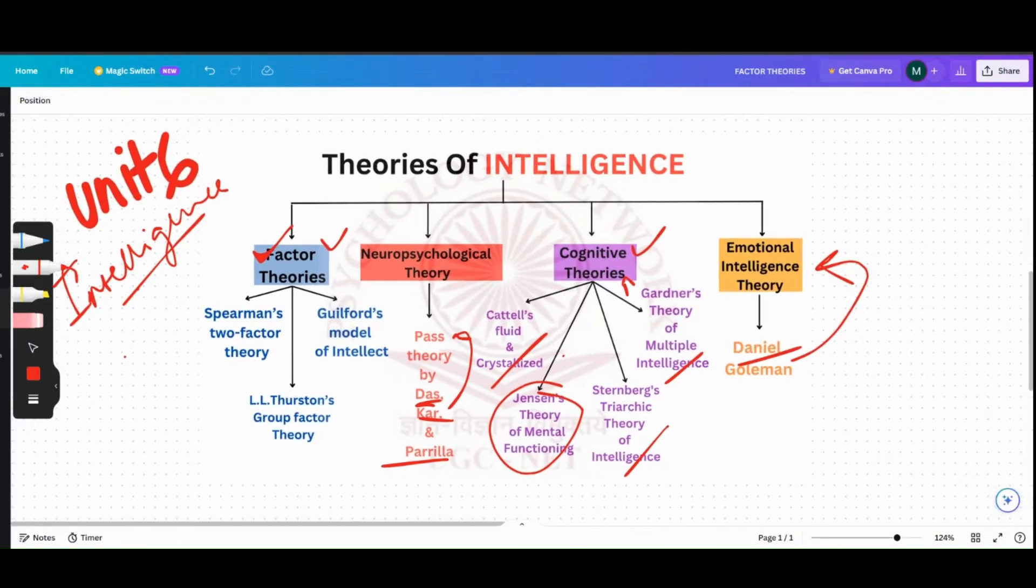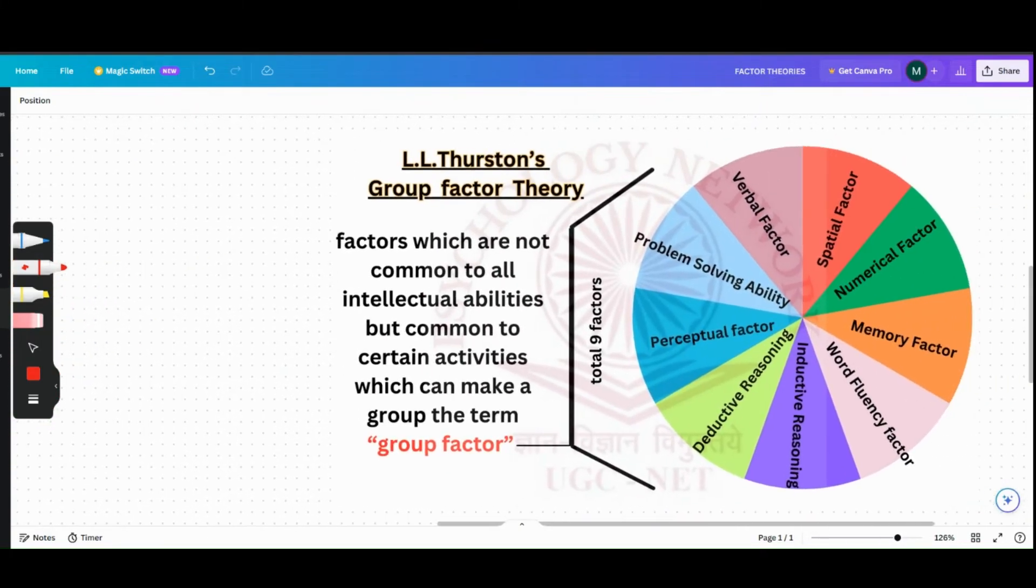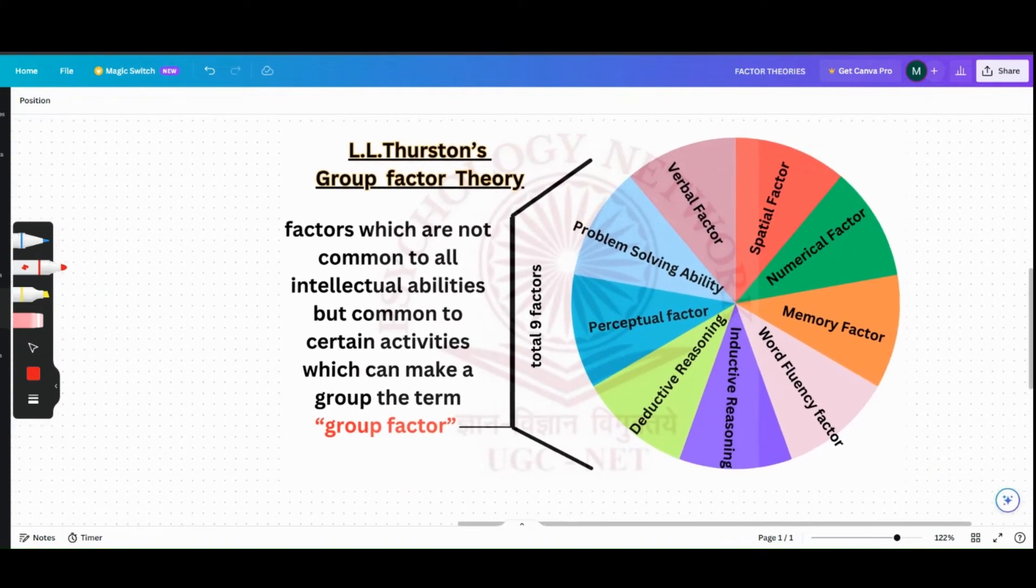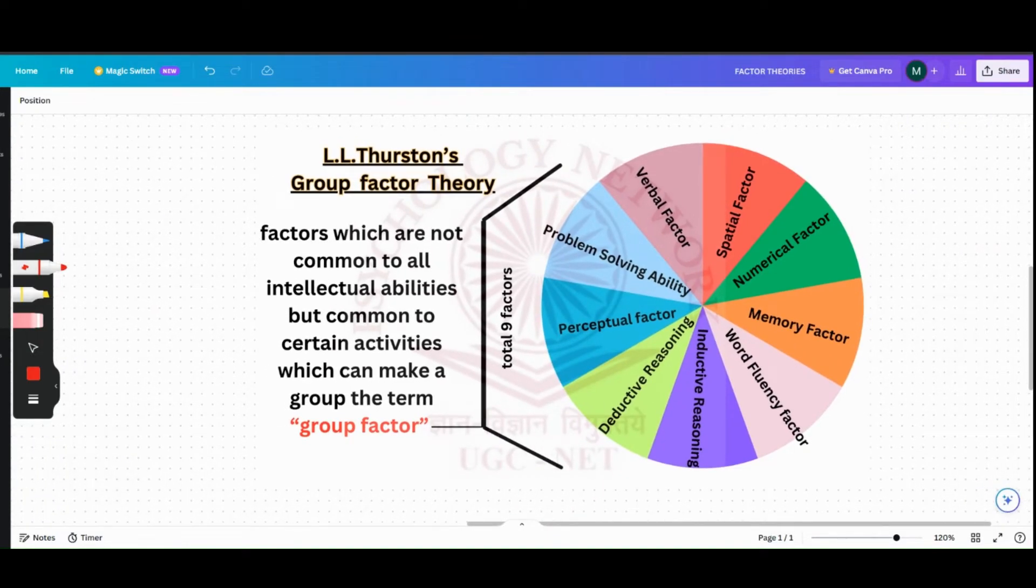So what does L.L. Thurston talk about in Group Factor Theory? Before that, let me talk a little bit about Spearman's Two-Factor Theory - there is another video on that. Spearman's Two-Factor Theory talked about a general factor that is common to all the tasks carried out by an individual and specific factors that help an individual deal with specific tasks.